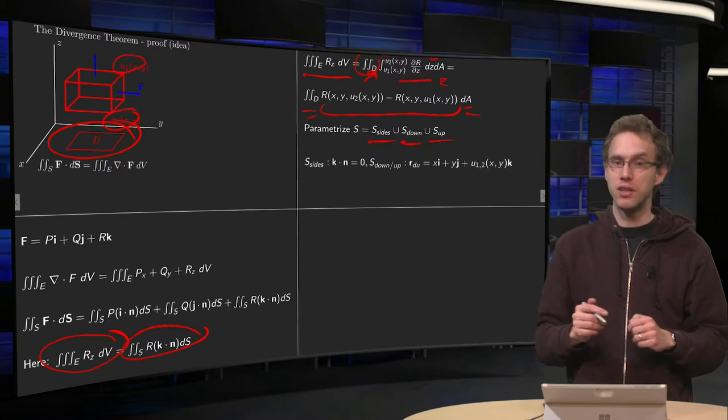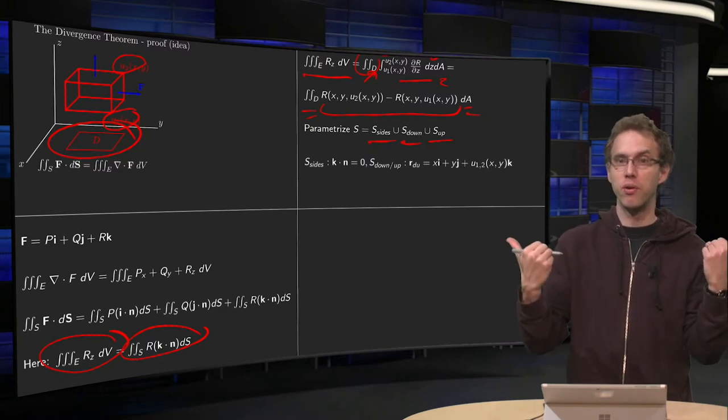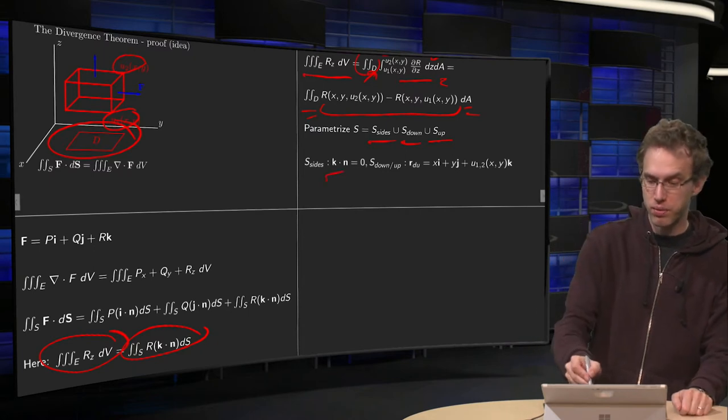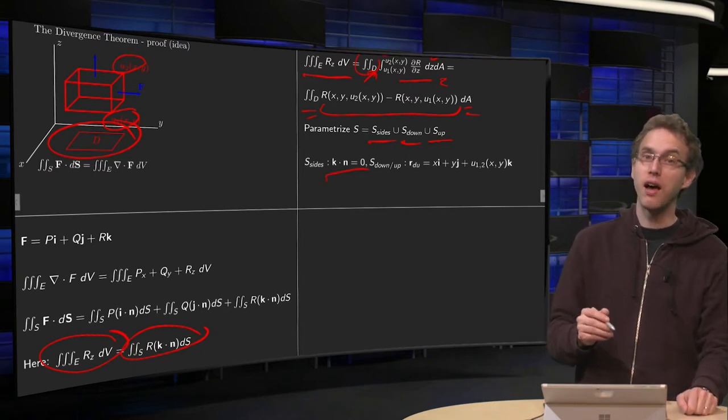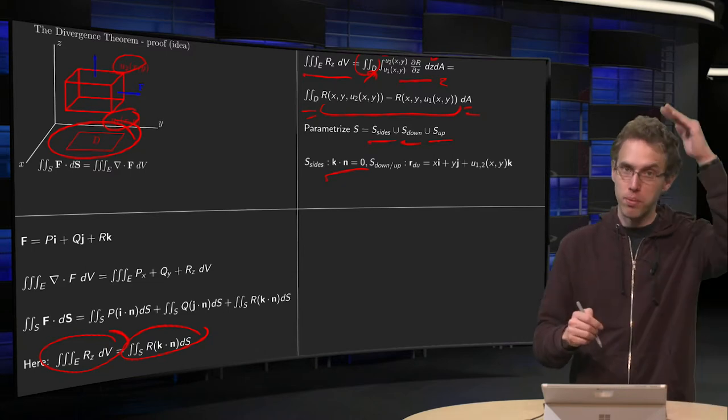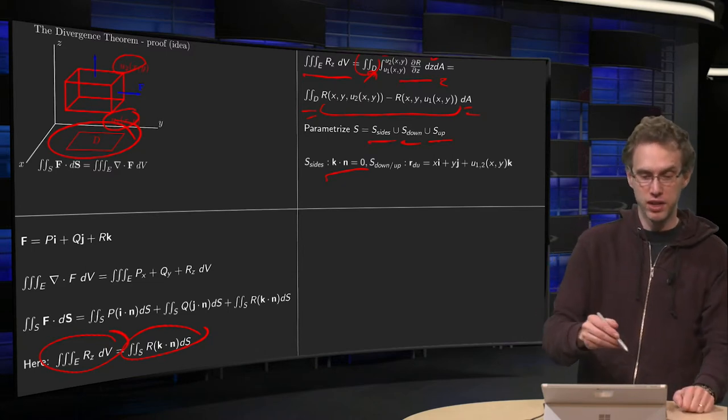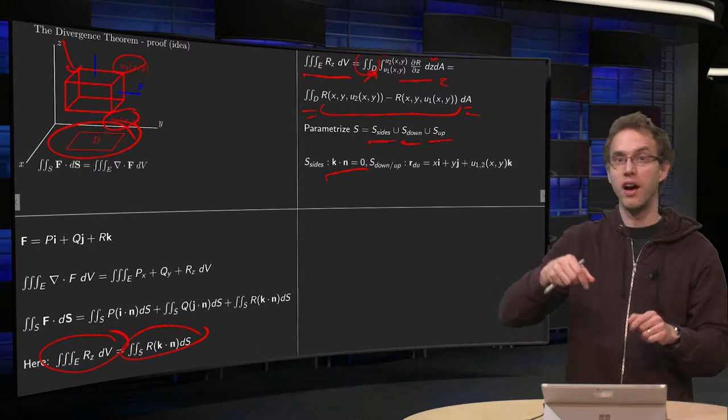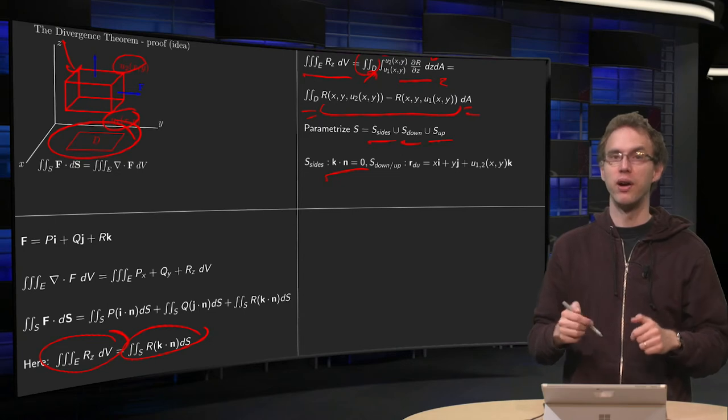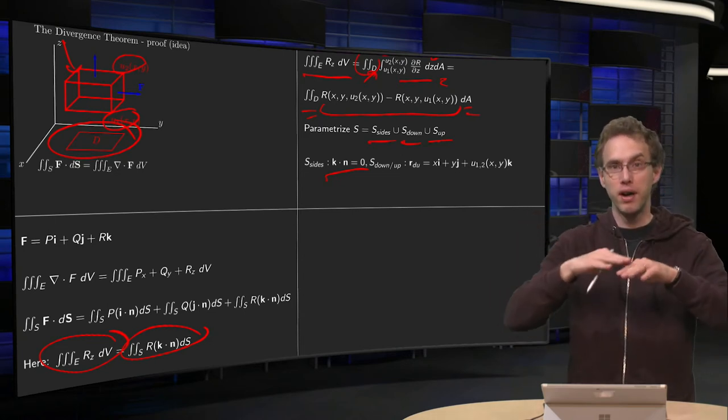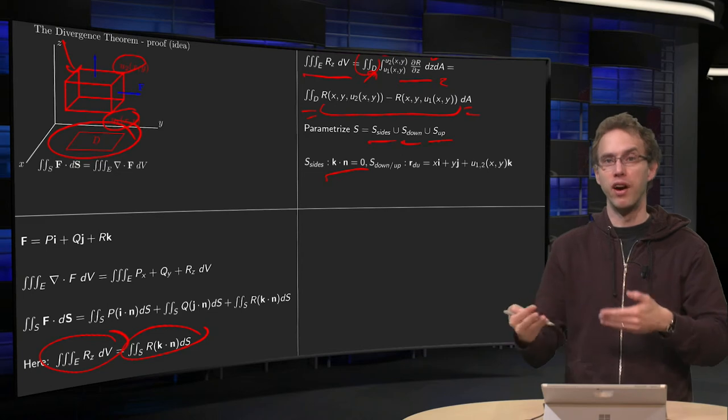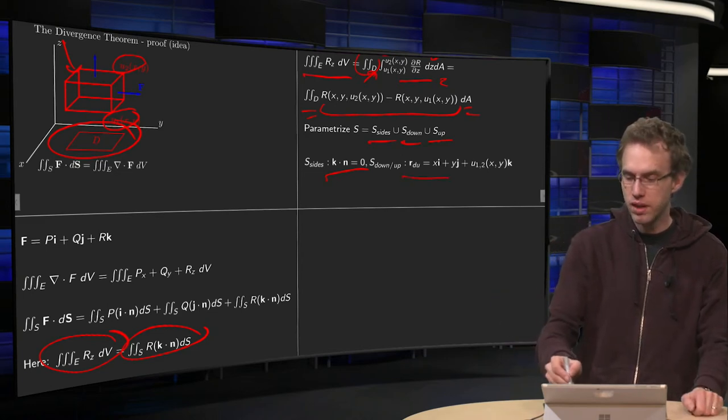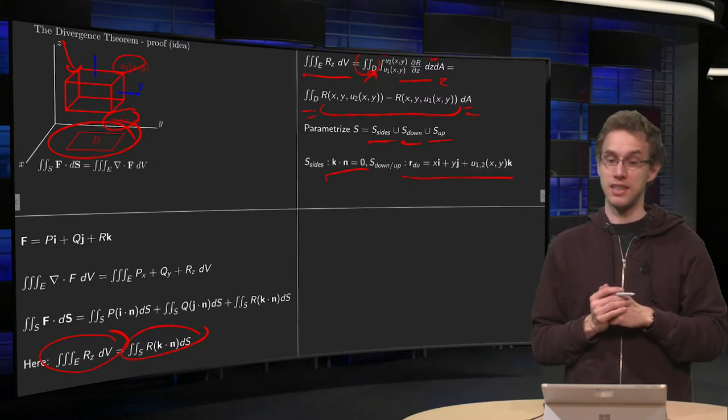And then we notice that along the sides, the normal, the component of the normal in the Z direction is zero, so they won't give a contribution. And we notice that if we are up or down, we can parameterize our surface, for example our surface up, using the coordinates x and y, and then u2 of x and y. Or if we are down, we can parameterize the lower surface as x, y, u1 of x and y. So R down and up can be parameterized like this.